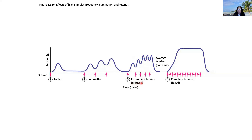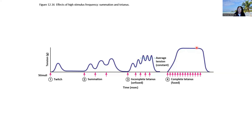This is considered unfused because there is still slight relaxation happening in between. In complete or fused tetanus, there is absolutely zero chance for relaxation — the contraction is fused and completely sustained. This can lead to a very dangerous state called tetanic contractions, where the muscle is essentially spasming with zero relaxation, eventually leading to fatigue where the muscle gives out because it has exhausted all the ATP required to activate the myosin head and keep the contraction going.